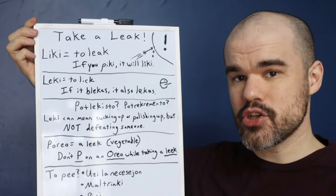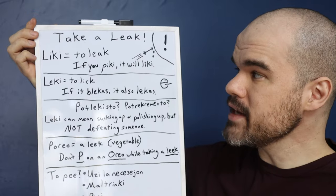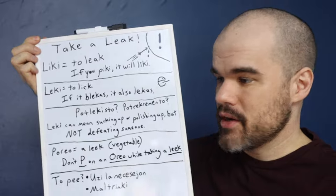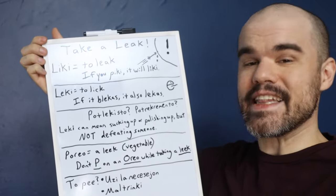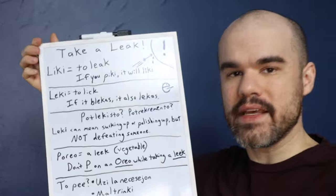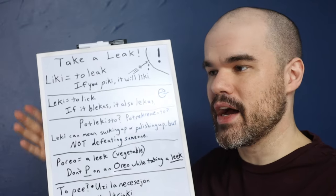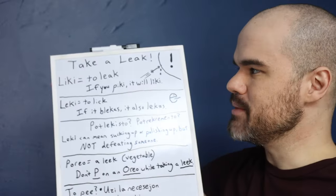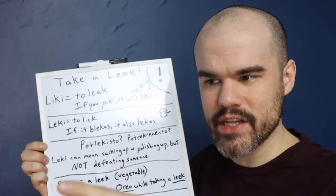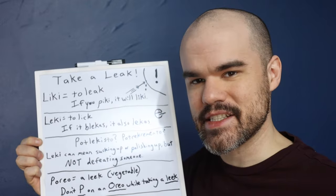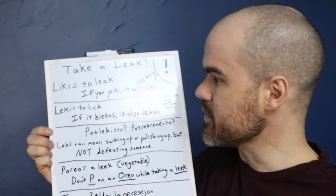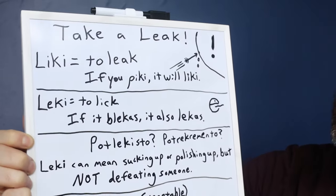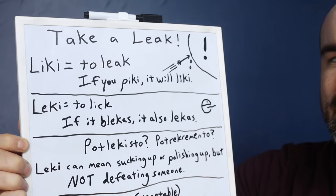Liki. Liki means to leak. Some dripping pipe is happening there — that is the word you're going to use: liki. It's an intransitive verb. You don't leak something; it is intransitively, by itself, leaking there. A way to remember that liki is 'to leak' is: if you piki it, it will liki. Piki is like to stab, to sting, to puncture.